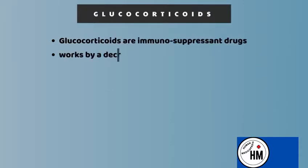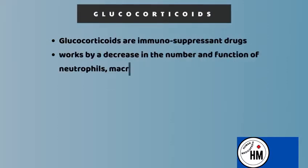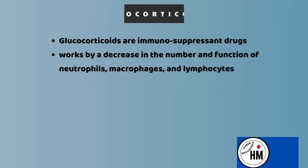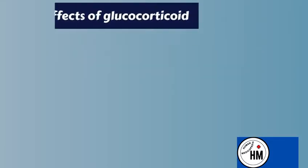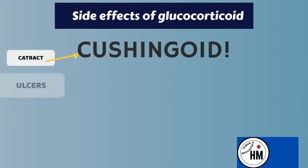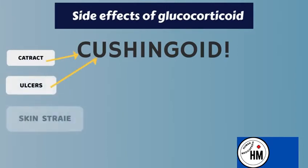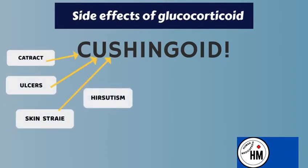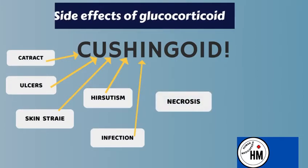Glucocorticoids are immunosuppressant drugs that work by decreasing the function of neutrophils, macrophages, and lymphocytes. The mnemonic for side effects of glucocorticoid drugs is 'CUSHINGOID,' which stands for: Cataract, Ulcer, Skin stria, Hirsutism, Infection, and Necrosis.